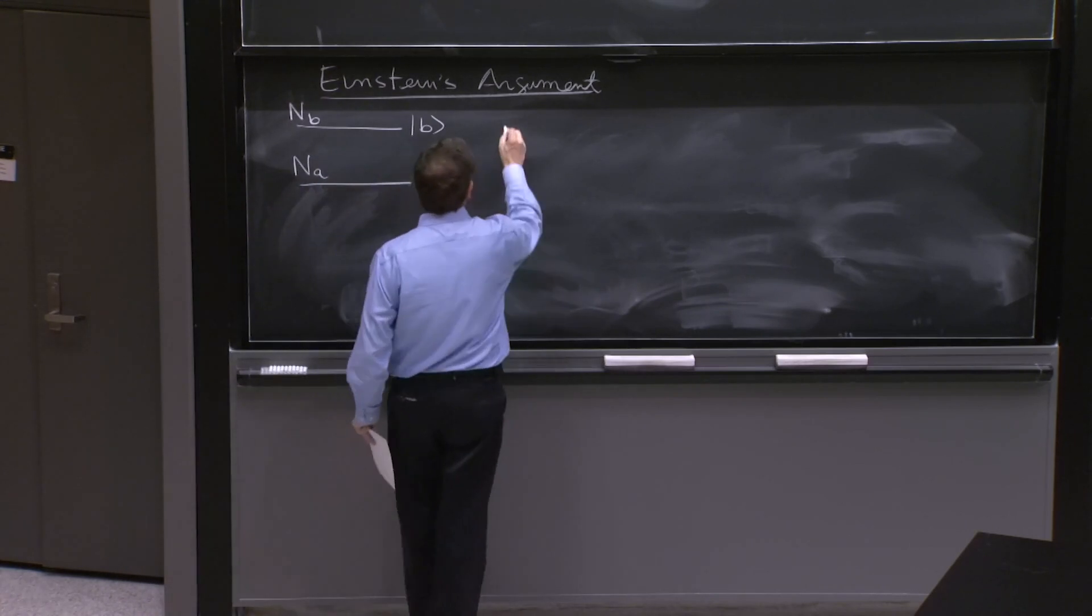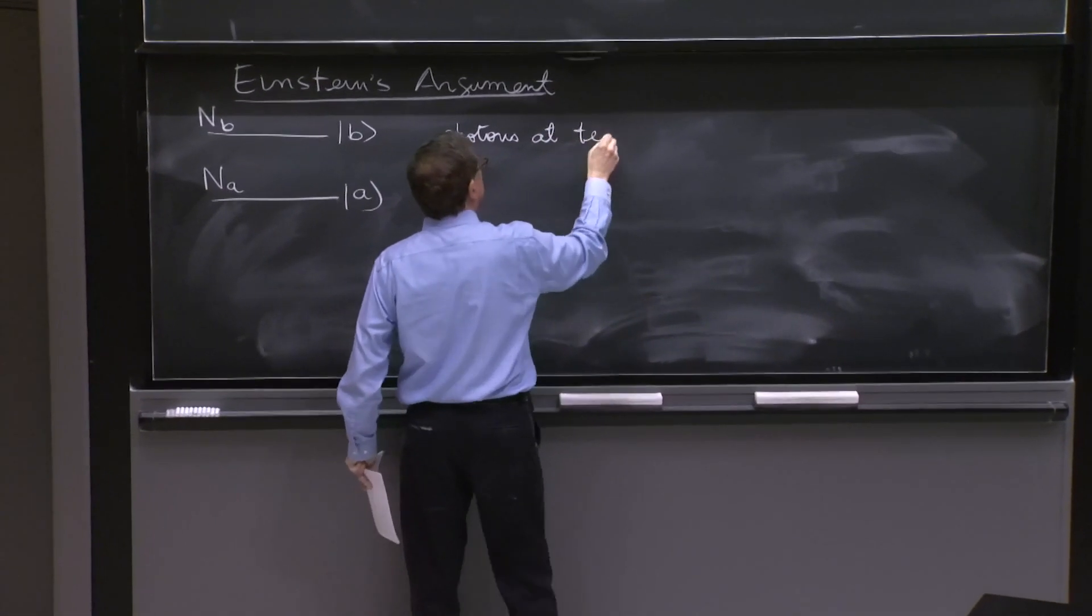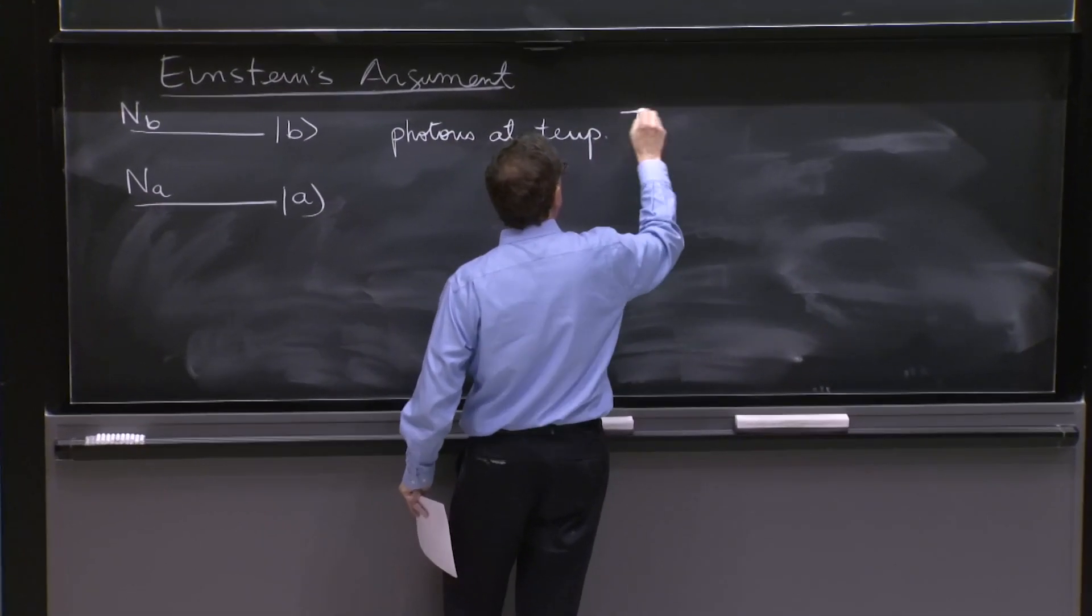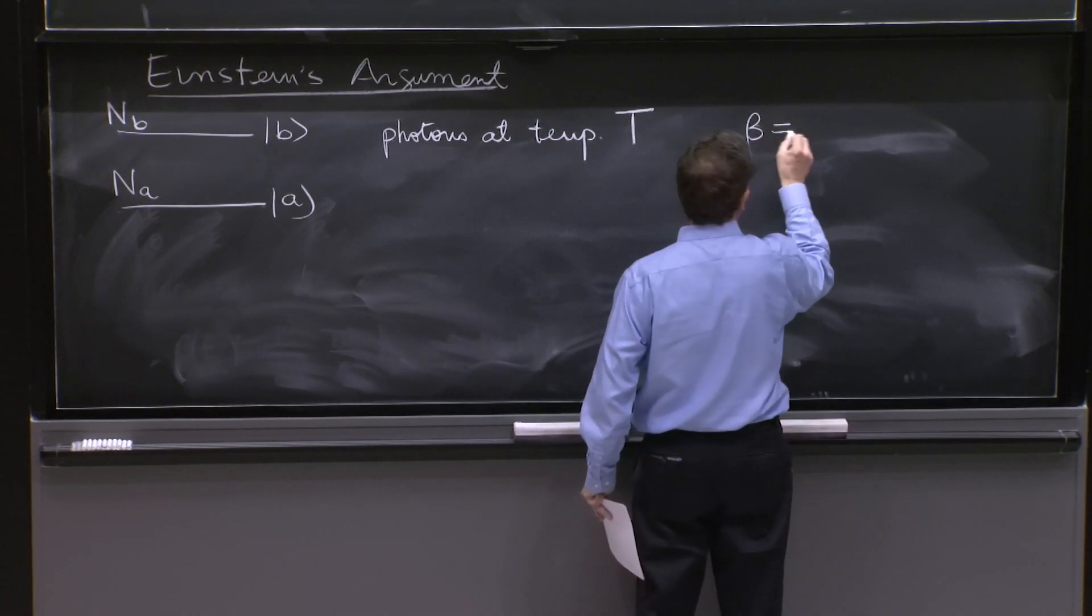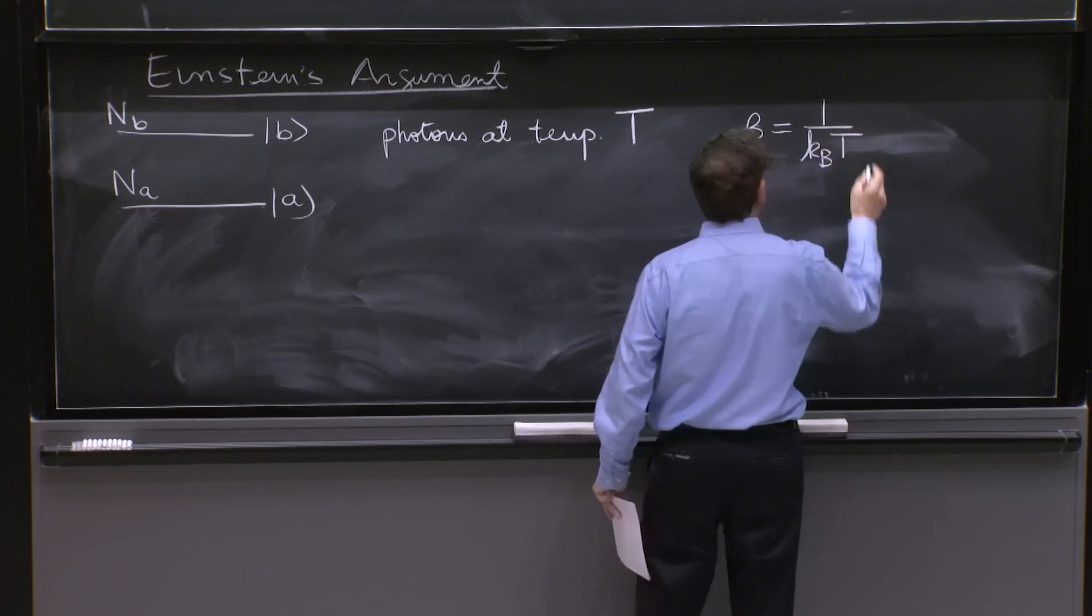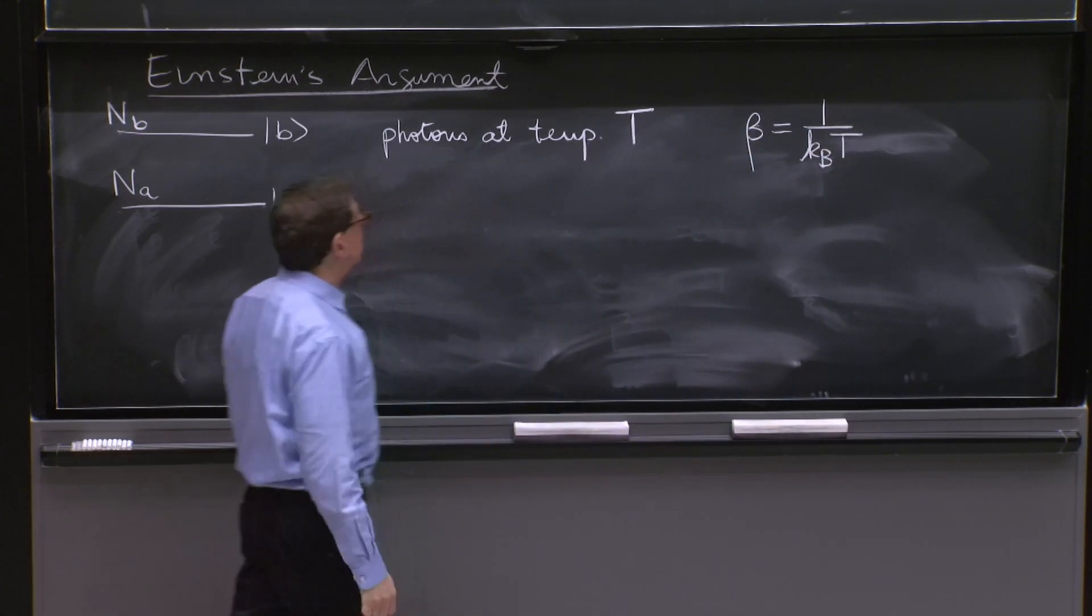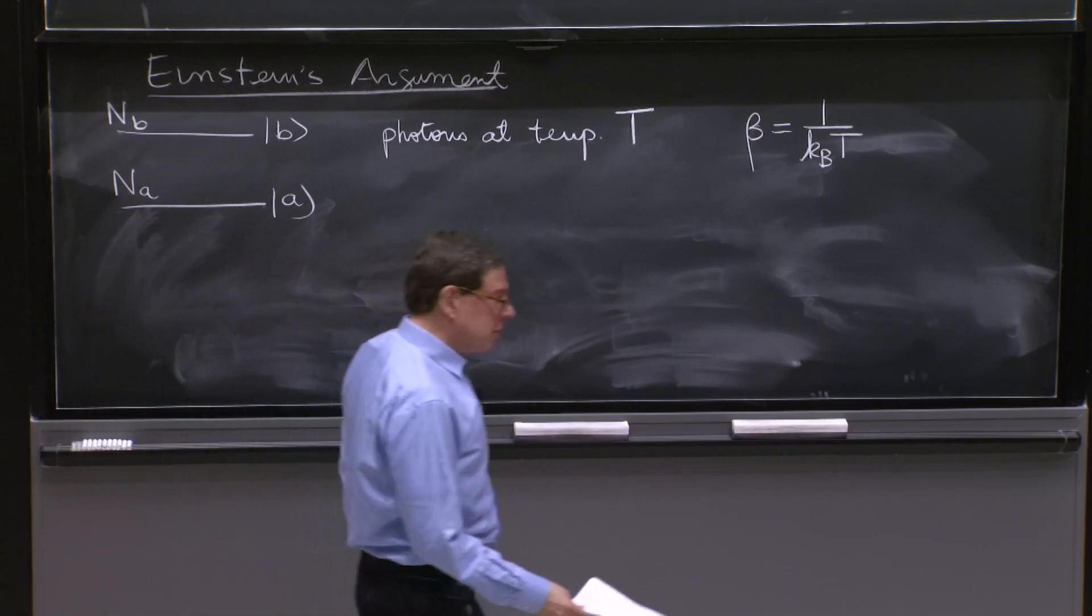And we also have photons at temperature T. I have a beta parameter, 1 over the Boltzmann constant times T. So this is the process we're going to consider.